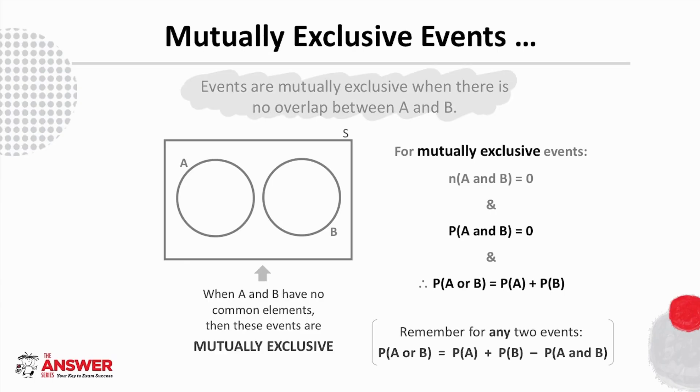Events are mutually exclusive when the common overlapping area between them is empty. This means the events have no common elements, for example odd and even numbers.